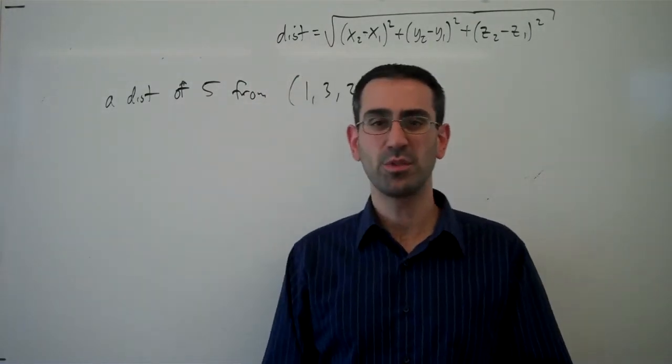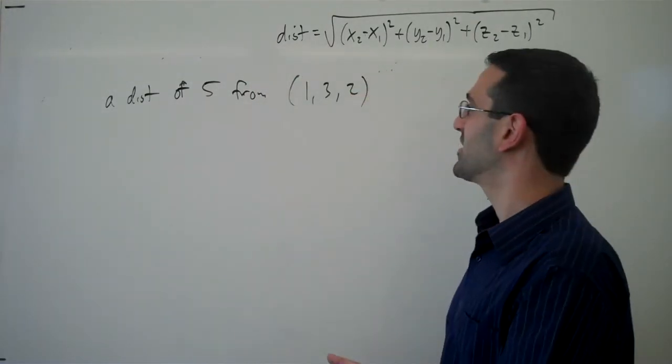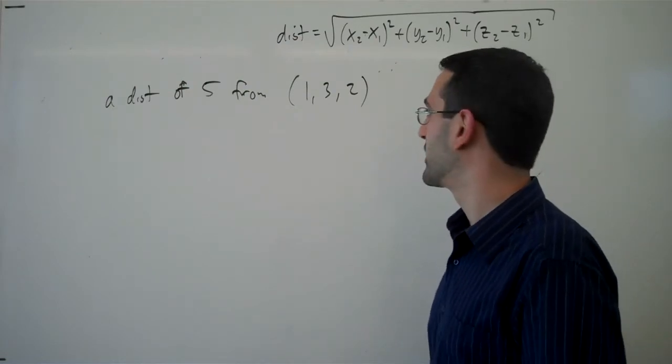Now think to yourself, what kind of shape would this describe? All the points that are equidistant from the point 1, 3, 2.